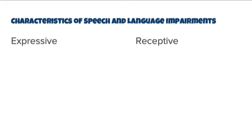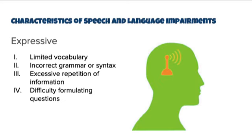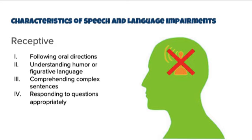Let's look at some characteristics of speech and language impairments in two major categories: expressive language and receptive language. With expressive language, a student might experience a limited vocabulary, incorrect grammar or syntax, excessive repetition of information, or difficulty formulating questions. If a student has receptive language impairments, they might experience difficulties following oral directions, understanding humor or figurative language, comprehending complex sentences, and responding to questions appropriately.